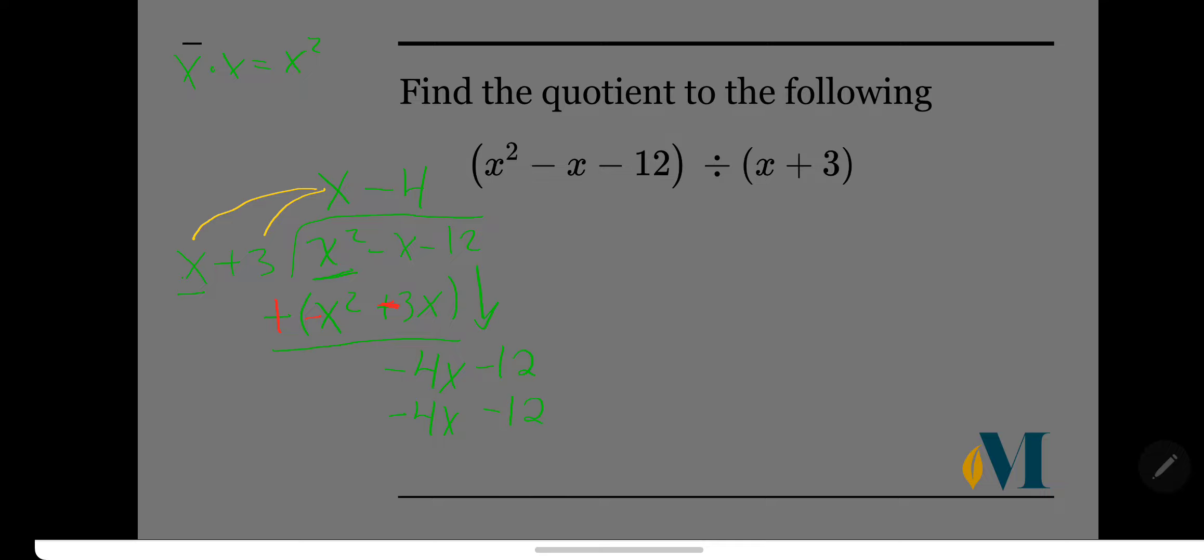I'll say this, if your first term does not cancel out, then you might have done something wrong. Again, if your first terms do not cancel out like this x squared and x squared here, then you probably did something wrong.